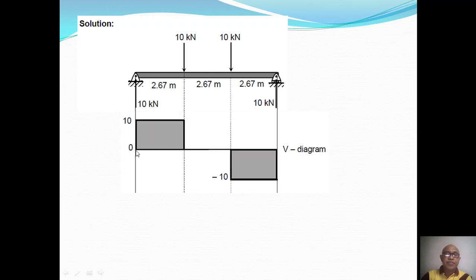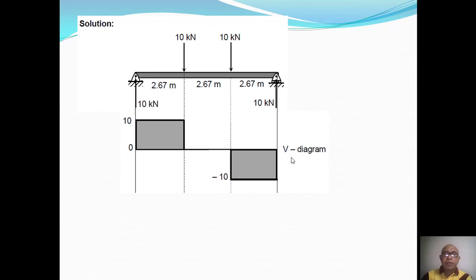To construct the shear diagram, start at zero at the left end, then move up 10 kN at the support reaction. There is no load from the support to the first 10 kN load, so the shear diagram goes straight. Subtract the 10 kN load — shear drops to zero. No load again, straight line. At the second 10 kN load, shear drops to -10 kN. Then the right reaction brings it back up to zero.